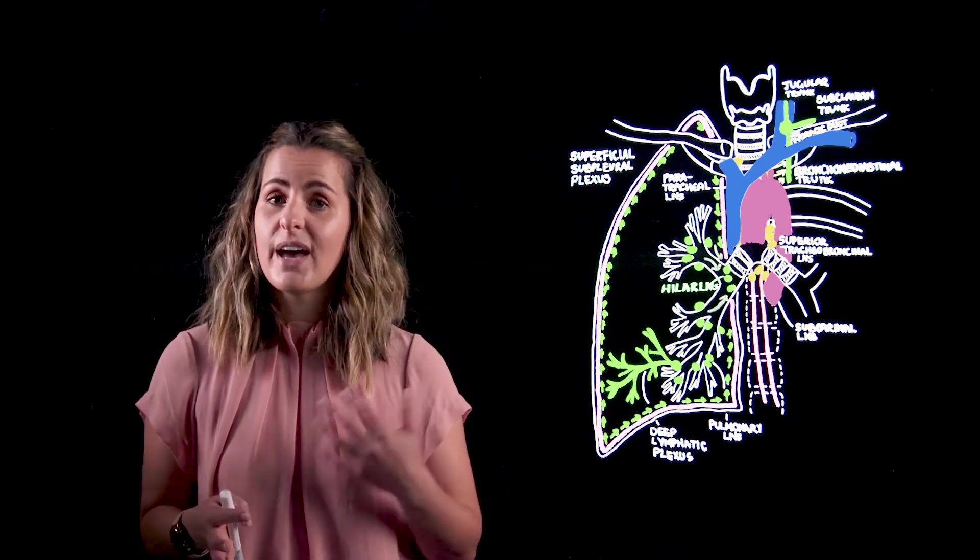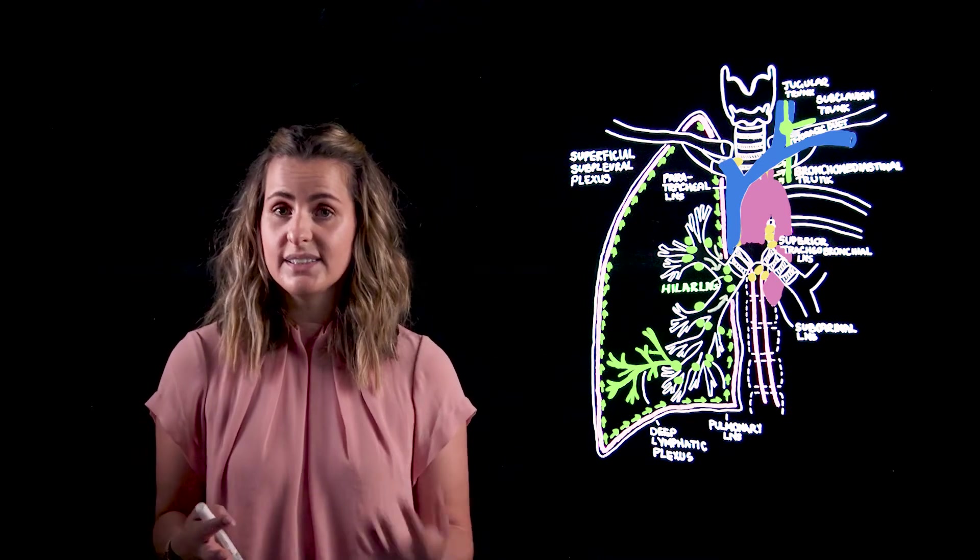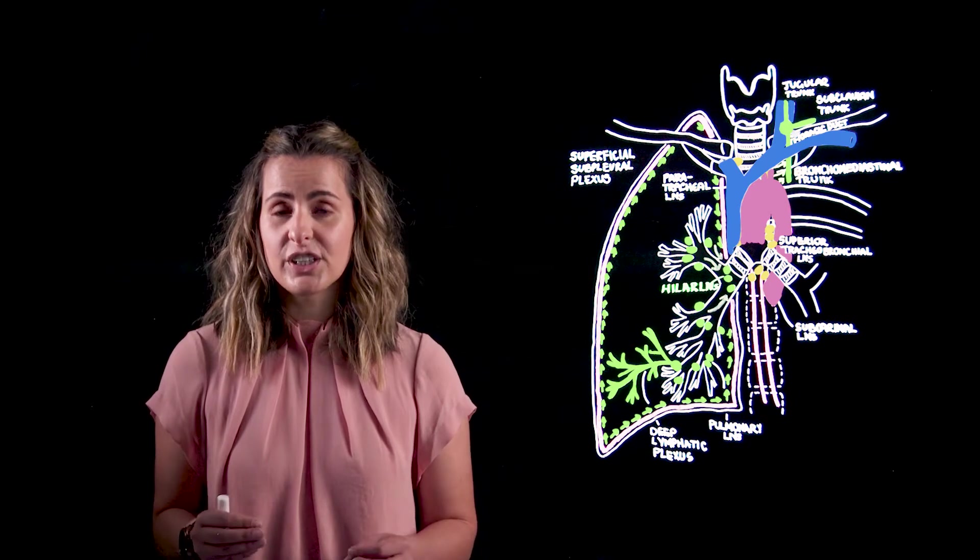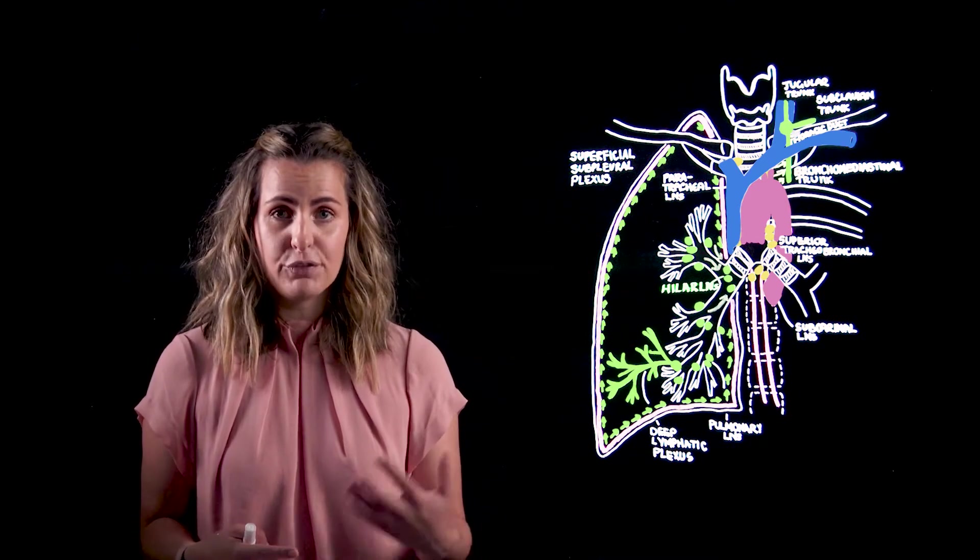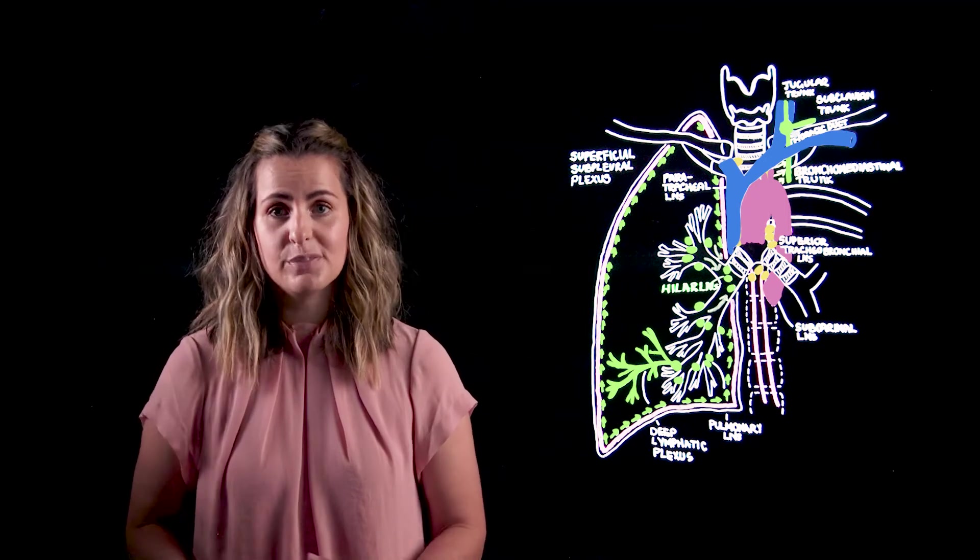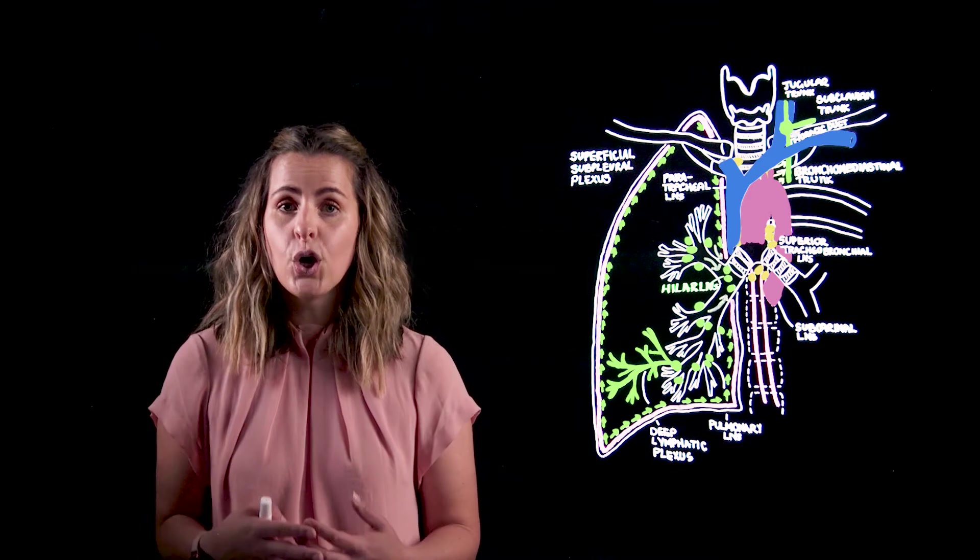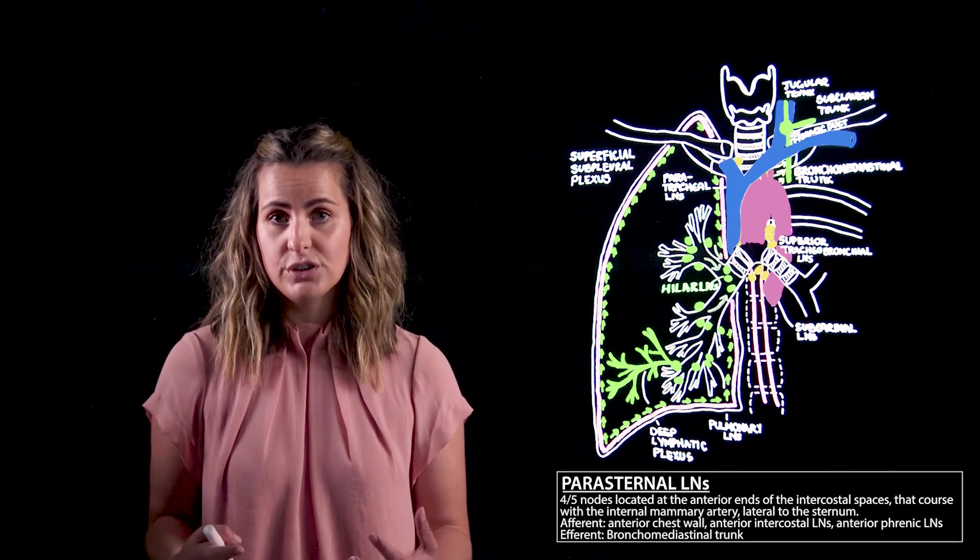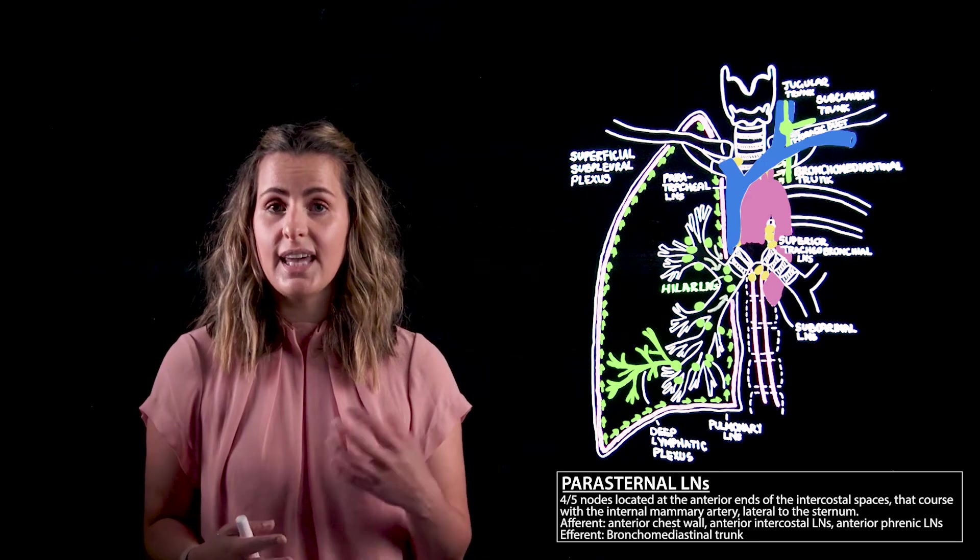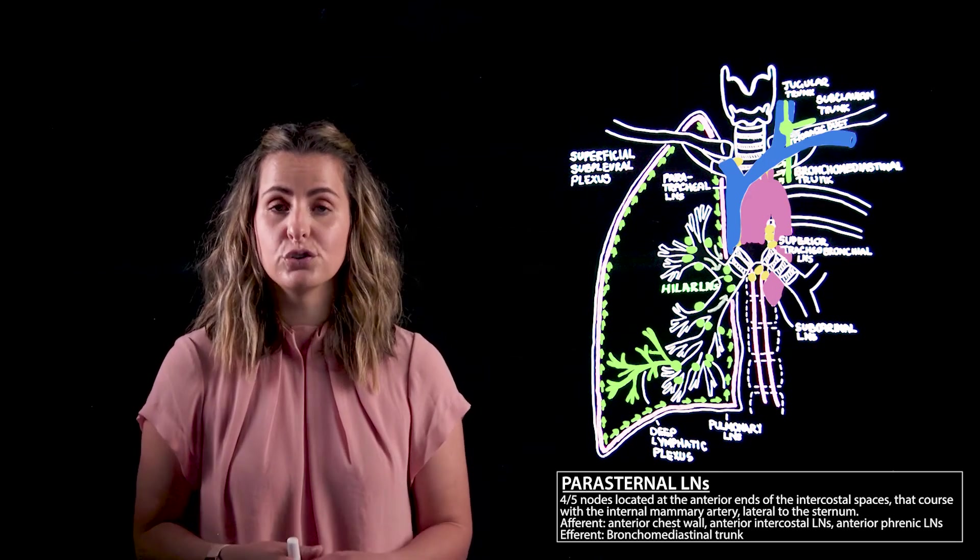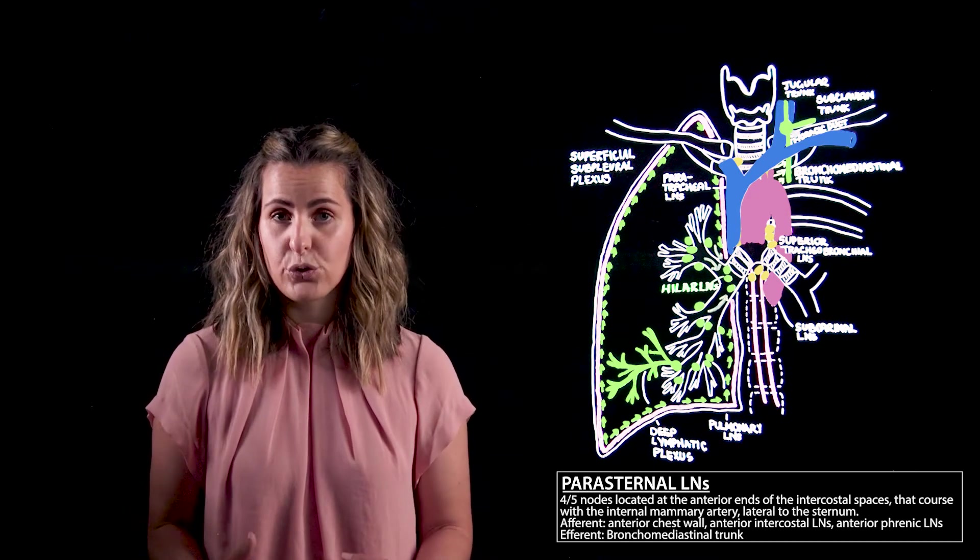Let us now consider some of our external structures such as the parietal pleura, the chest wall, and the diaphragm. The lymphatic drainage of these structures are surface dependent. Thus the anterior half of the pleura, the anterior intercostal spaces, anterior half of the diaphragm, and the medial breast will drain directly to the parasternal lymph nodes. These are a group of four to five nodes located in the anterior ends of the intercostal spaces and course with the internal mammary artery.